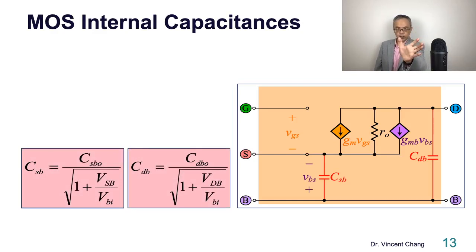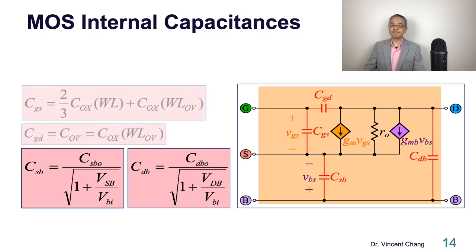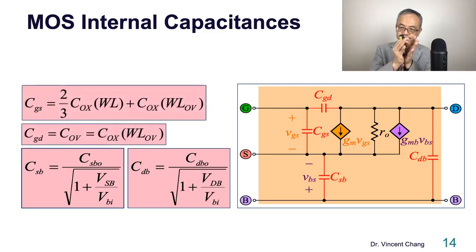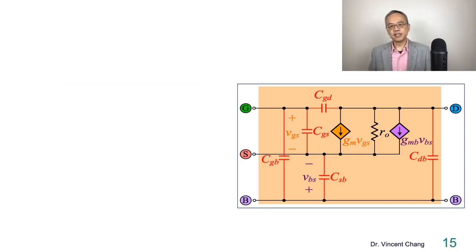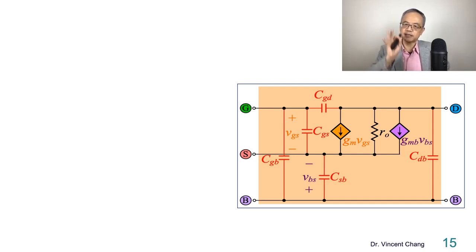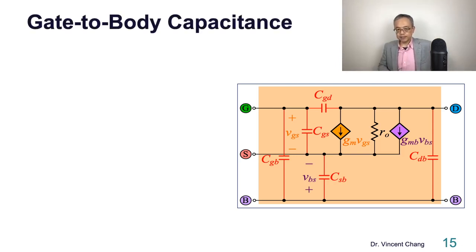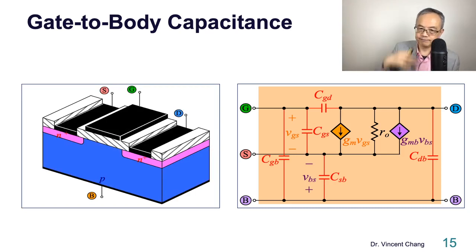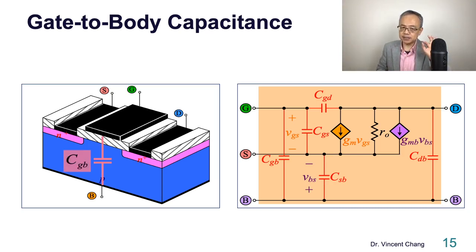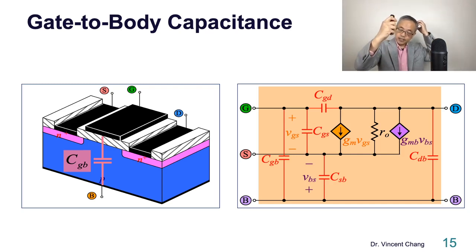Now, the second group of capacitances: source-to-body and drain-to-body using the junction depletion formula. But in reality there is also a fifth capacitance between gate and body — CGB. Physically, there is a polysilicon gate on top and a back gate on the bottom, with a capacitive effect between them.